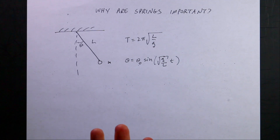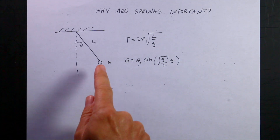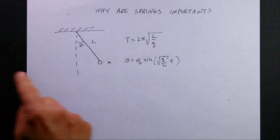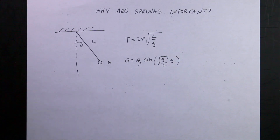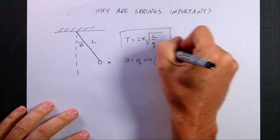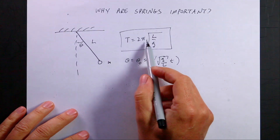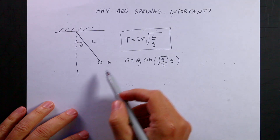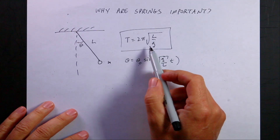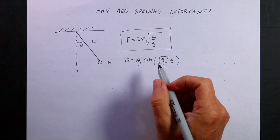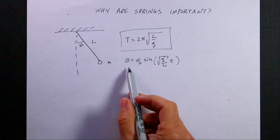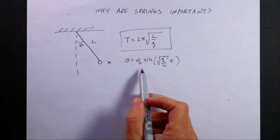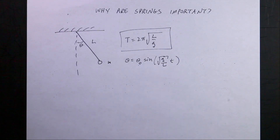It's introduced as another example of simple harmonic motion: if the angle is small enough, it oscillates back and forth and has a period — the time for one complete oscillation — two pi times the square root of L over g, where L is the length of the string and g is the magnitude of the gravitational field. You can model it with a harmonic solution of sines and cosines.